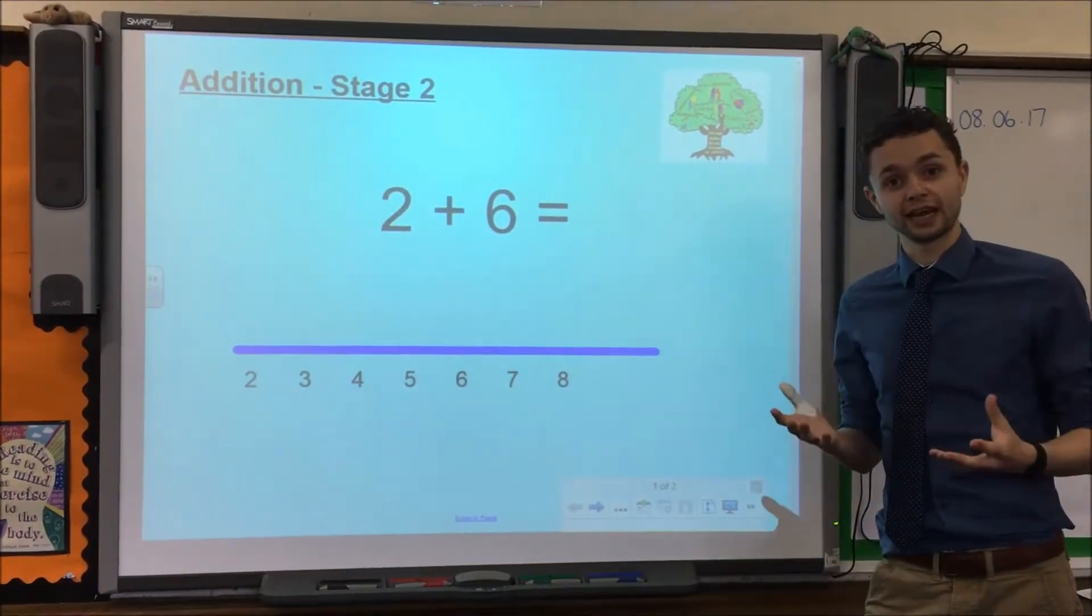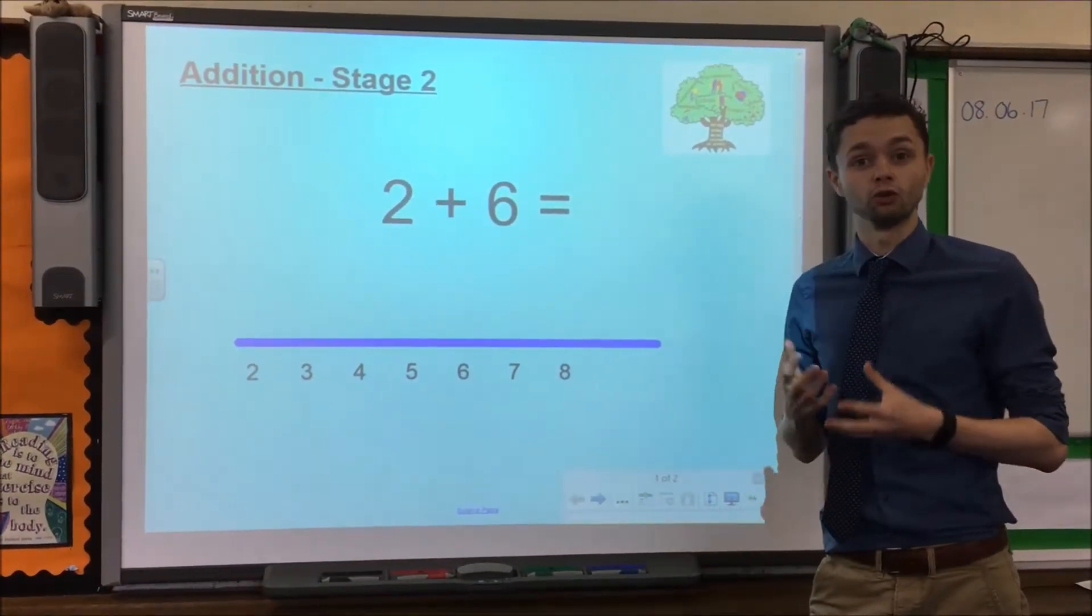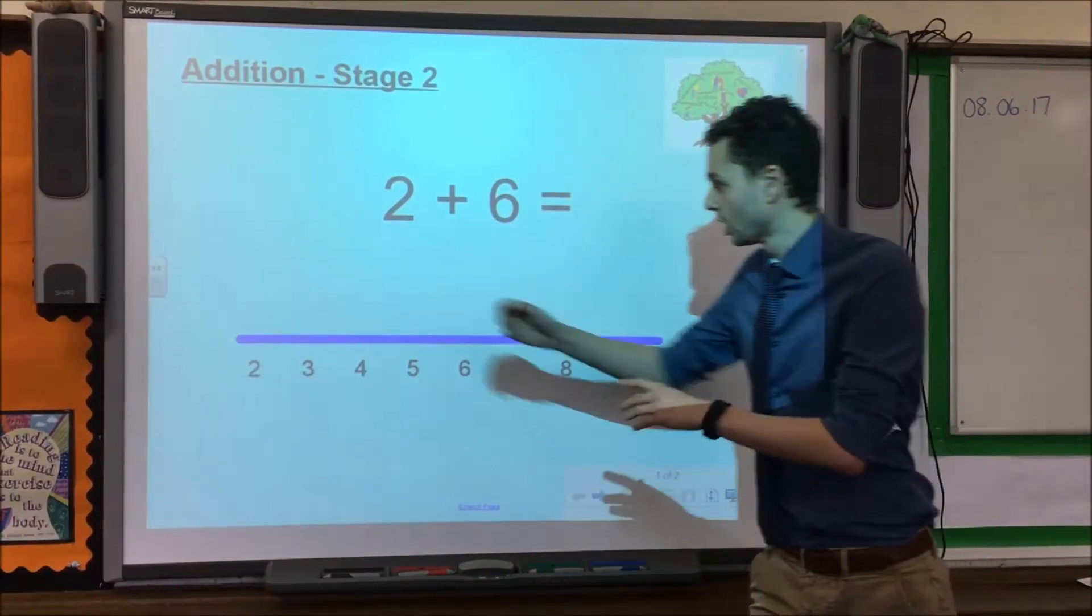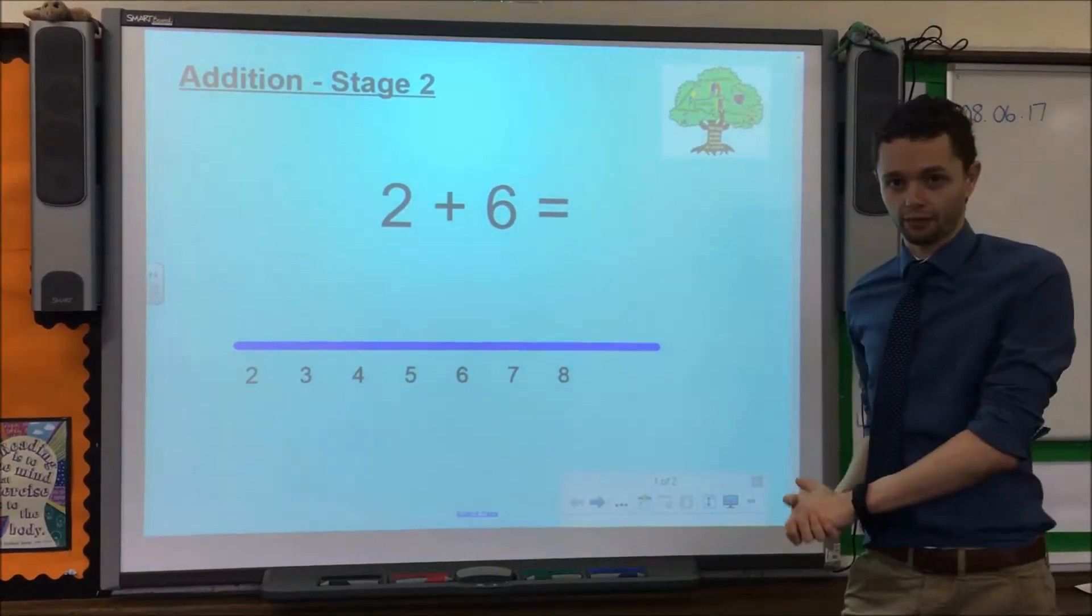Stage 2 differs from stage 3 in that the number line is already numbered for the children, so any number line that children are given to help answer the question should already have numbers at the bottom.